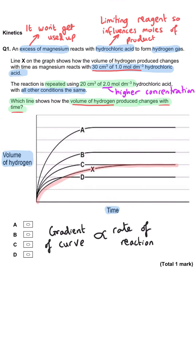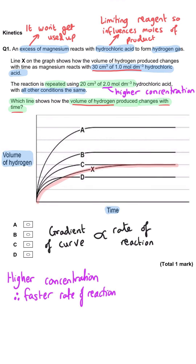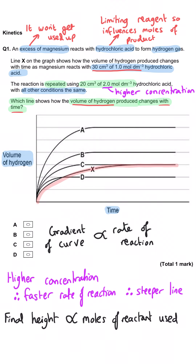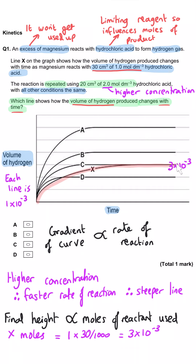Because the concentration has increased — in fact it's doubled — the rate of reaction will also increase and so the line will be steeper. That doesn't actually help us because all four lines A, B, C and D are steeper. So we have to look at the final height — the volume of hydrogen gas produced — which is proportional to the moles of hydrochloric acid used because the magnesium is in excess. The moles initially is 3×10⁻³, and the final position is three lines up.